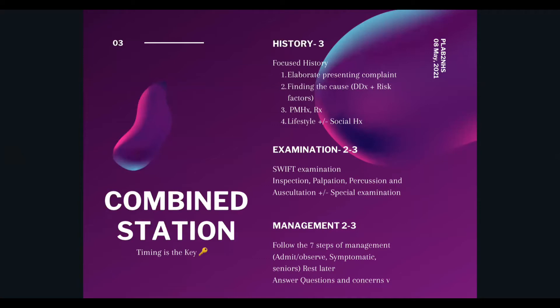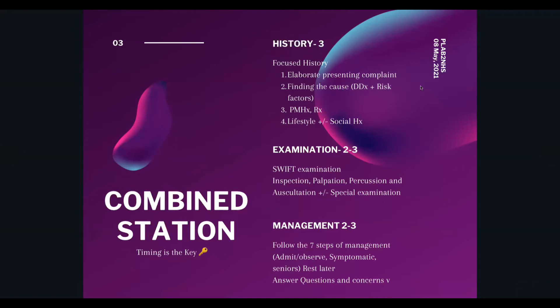For general inspection, look at the shape, size, and asymmetry of both ears, and look for any discoloration or deformities. Then move to a close inspection of the affected ear — look for any scars, hematoma, redness, obvious swellings, and any obvious lymph node enlargement.